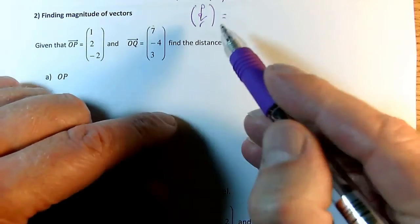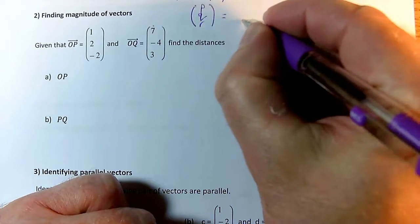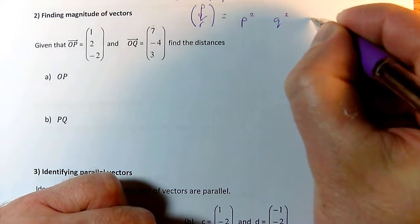this is basically just Pythagoras. We take the step in the x direction, the step in the y direction, and the step in the z direction, and what we do is we square them all. So we do p squared, q squared, and r squared.